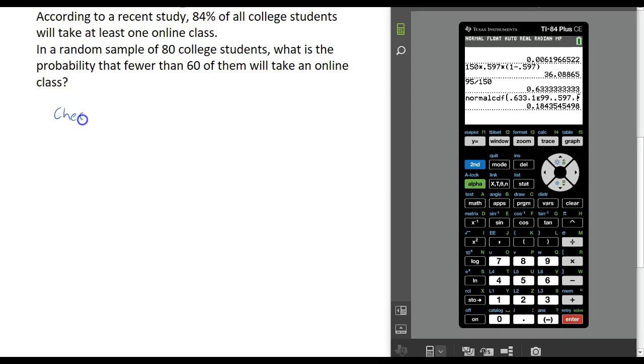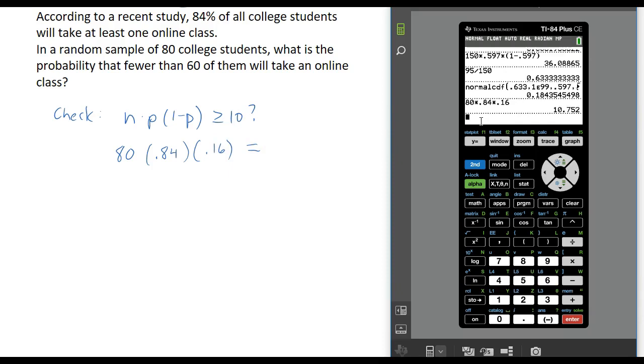We're going to check to make sure this is normal enough to approximate using the normal distribution. We do n times p times 1 minus p, and we want this to be at least 10. In this example, my n is 80, my population proportion is 84%, and 1 minus that would be 16%. If I calculate that, I get over 10, about 10.8. So that is good enough.